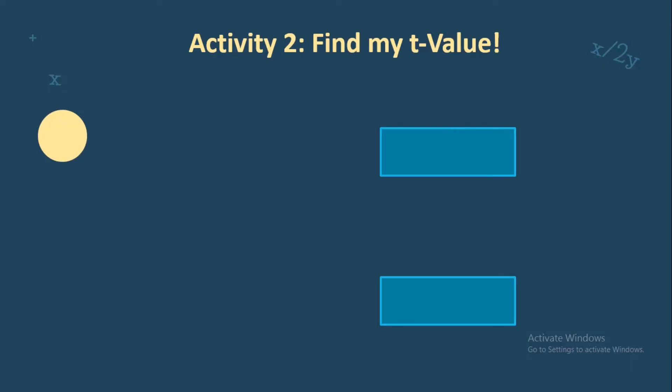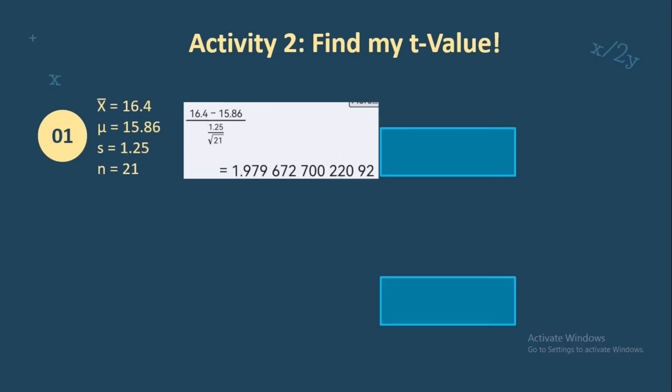Now let us move to Activity 2: Find my T value. This time, we use the formula for T value. Instead of population standard deviation, we now use sample standard deviation, which is represented by S. For number 1: sample mean is 16.4, population mean is 15.86, sample standard deviation is 1.25, and sample size is 21. So: 16.4 minus 15.86 over 1.25 divided by the square root of 21. We get 1.979, and rounding off, the T value is 1.980.